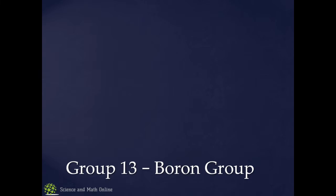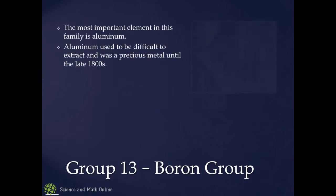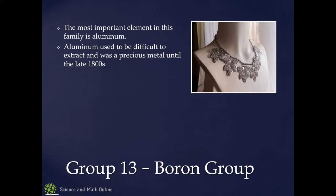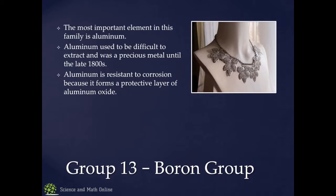I did add the extra here for the boron group — the most important one is aluminum. Until the late 1800s, aluminum was considered a precious metal because they could not extract it from the ore. Then they finally found an inexpensive way to remove aluminum from its ore. Good old supply and demand — the supply of aluminum went way up and the price went down. Victorian era aluminum necklaces are no longer worth much other than as antiques.